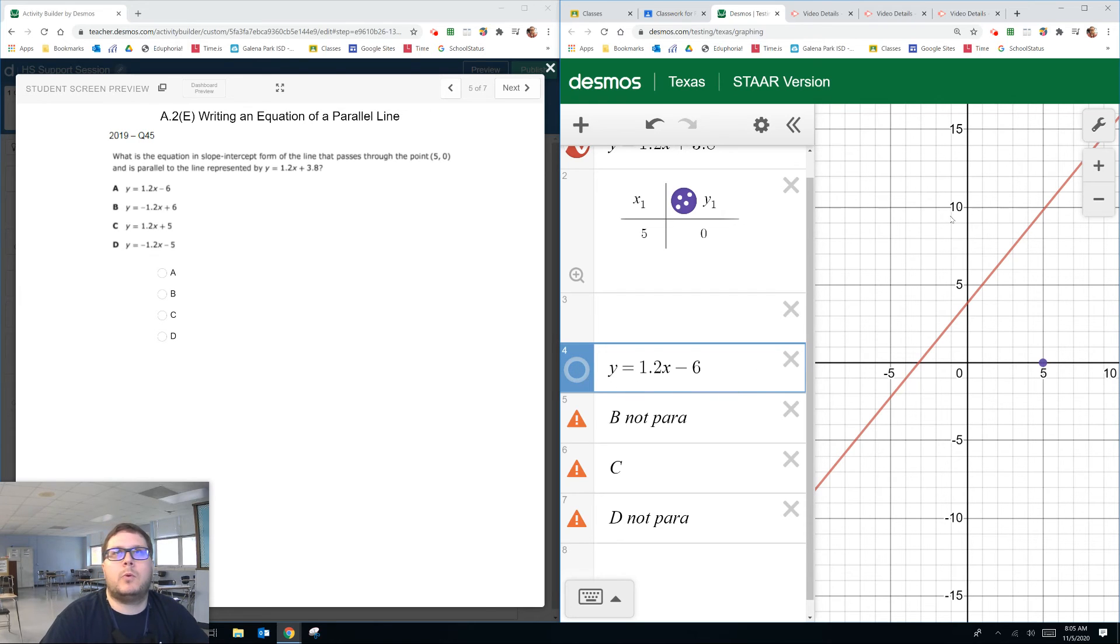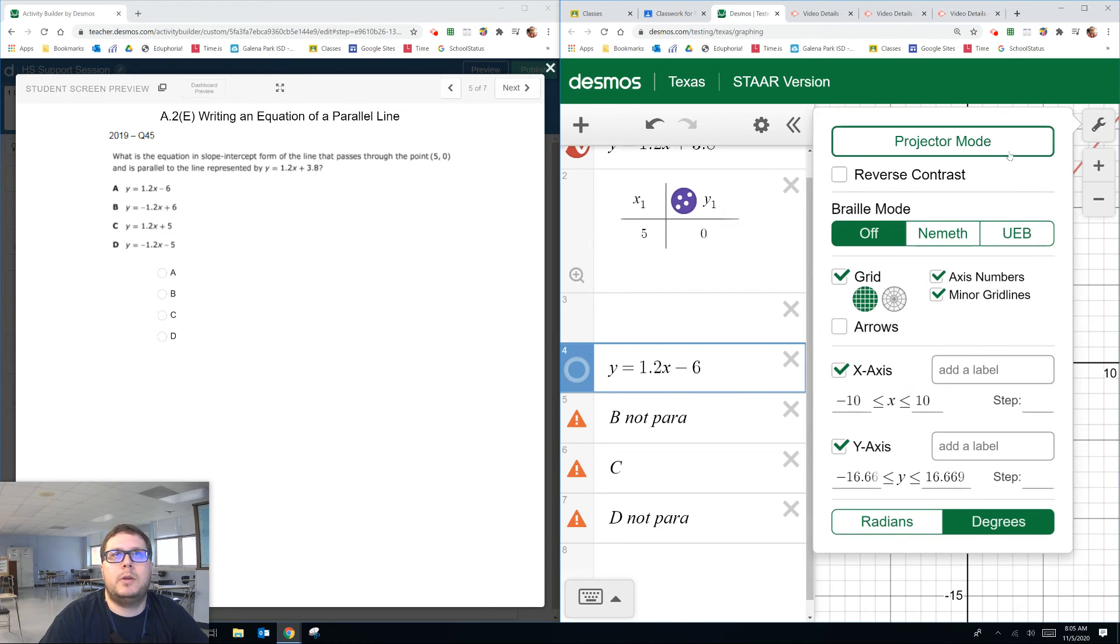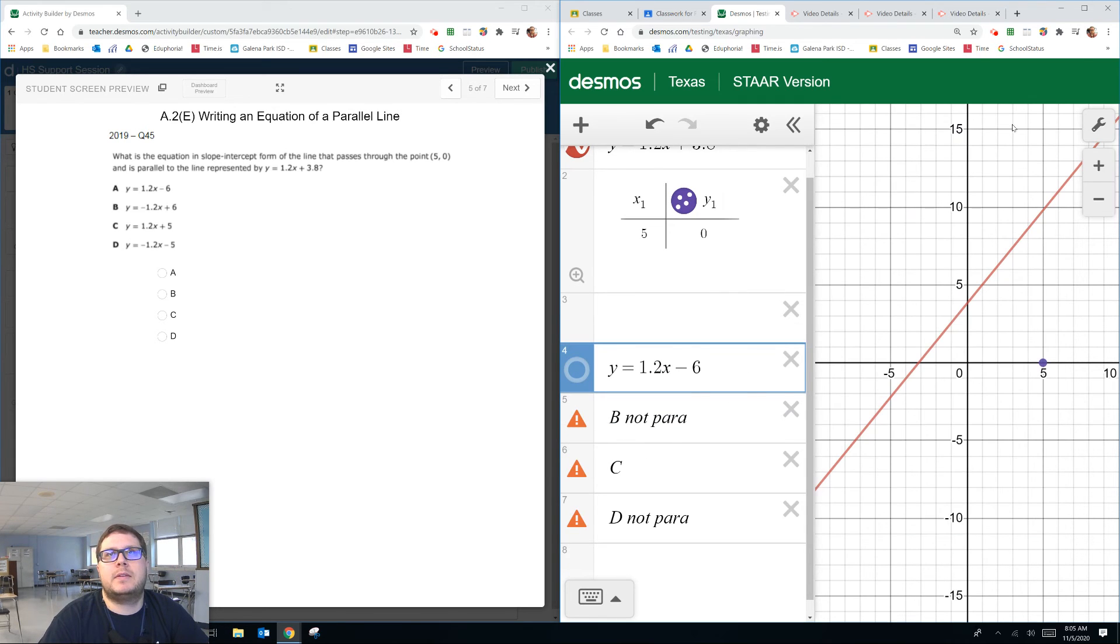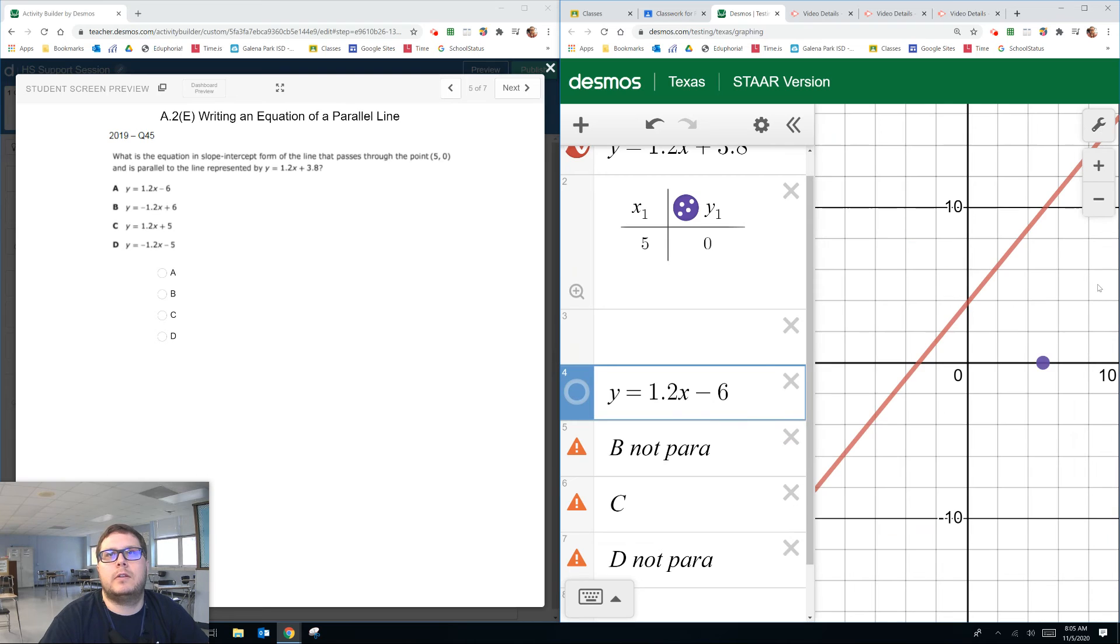Something else. Some people don't quite know this. If you click on the wrench right up here and click on projector mode, it blows things up just a little bit bigger and makes it easier to see. I think I just turned it off. Yeah, there we go.